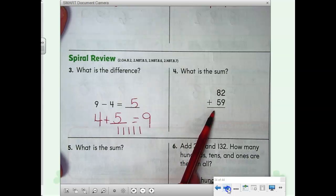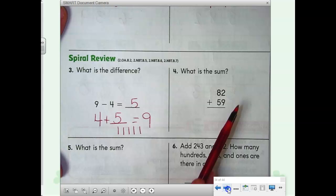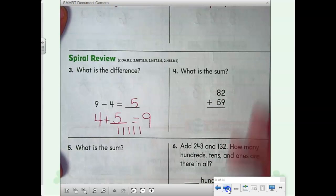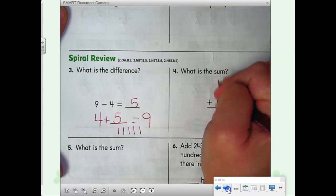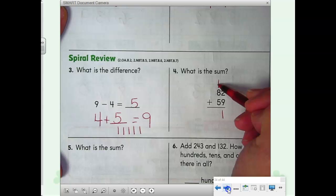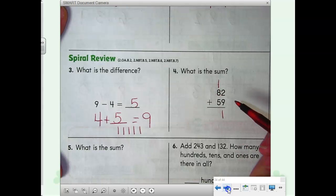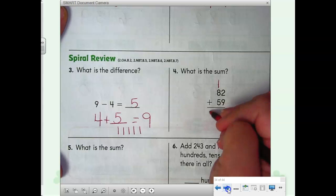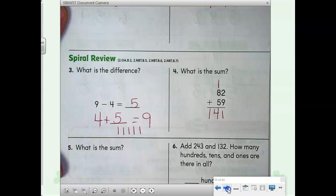Adding a 2-digit number. Where do I start? Ones always. 2 plus 9? 11. 1 ten and 1 one. 8, 1 plus 8 is 9. 9 plus 5 is 14. 1 is in the hundreds place. 4 is in the tens place. 141.